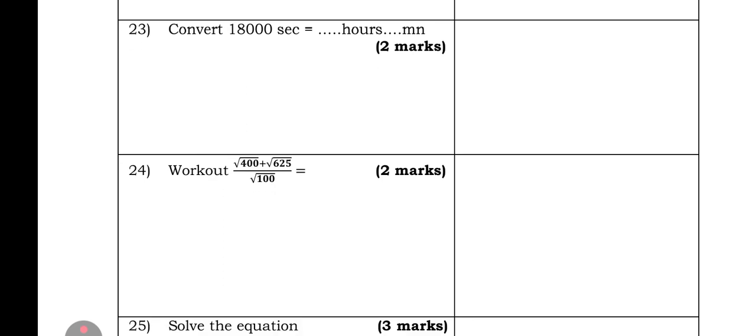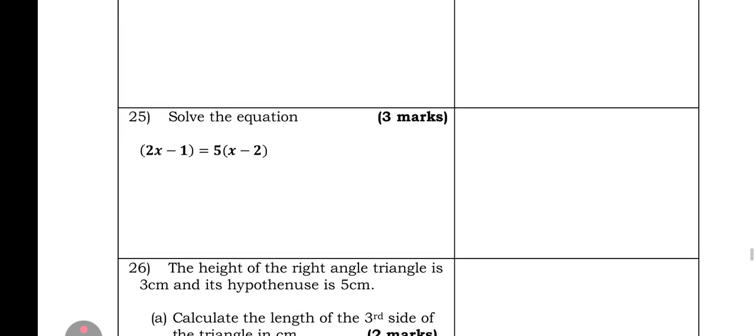Square root of 400 plus square root of 625 plus square root of 100. Very easy.